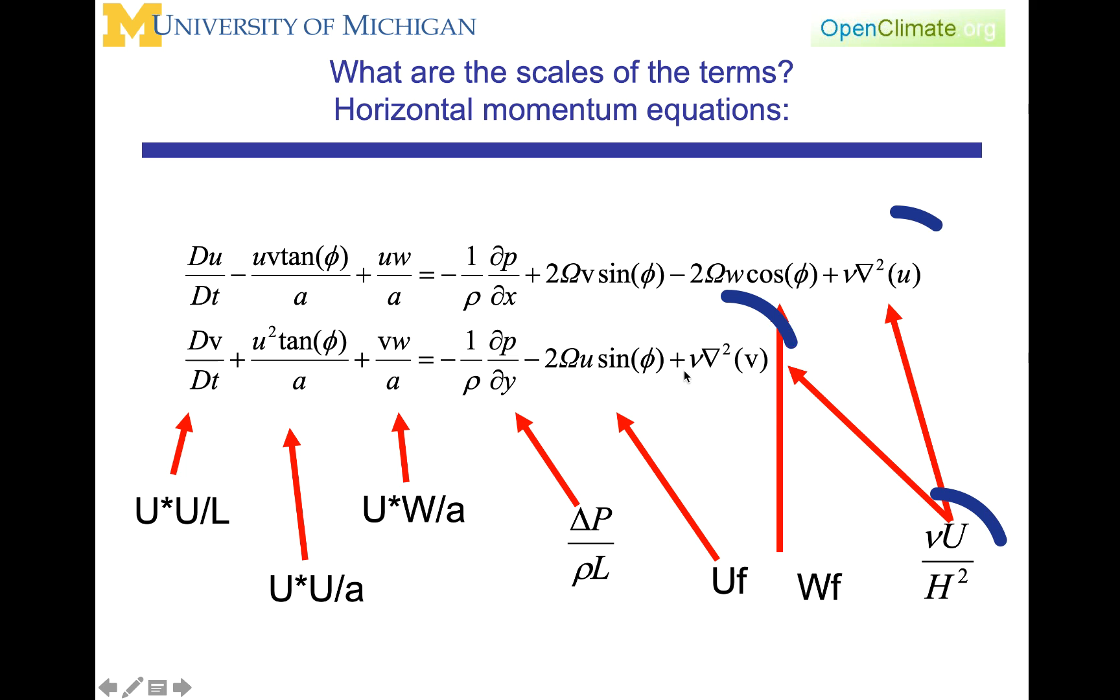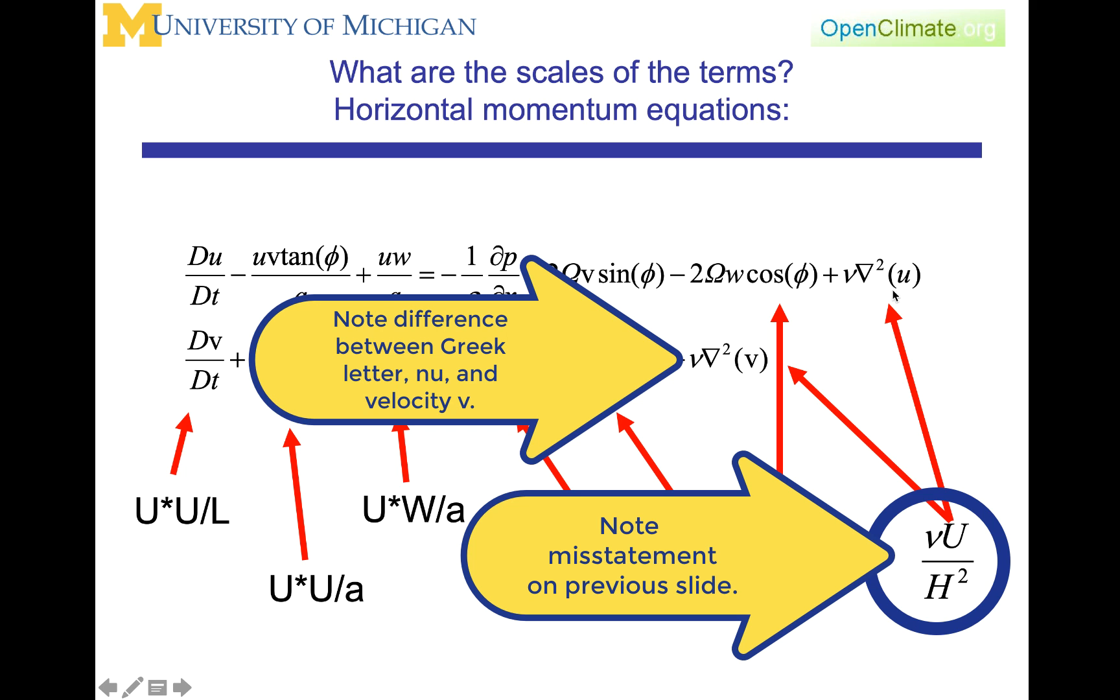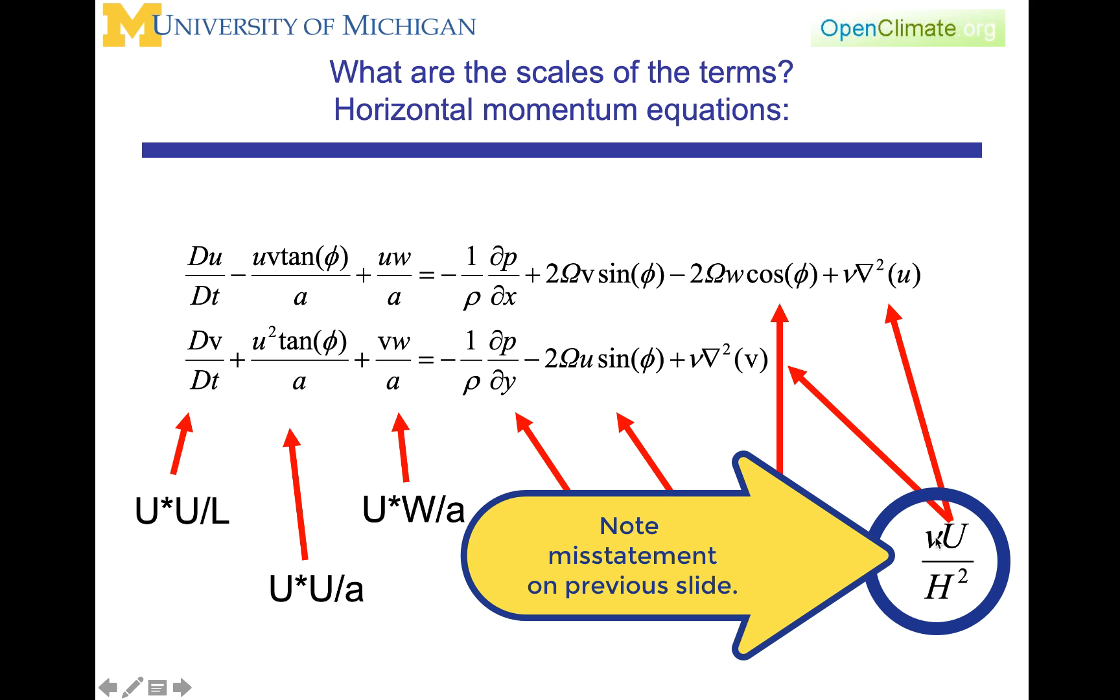And then the scale of the viscosity term is this viscosity coefficient times u, the velocity, over h squared. There's a little bit of a trick there, because since this del squared is the second derivative with respect to x, the second derivative with respect to y, and the second derivative with respect to z, since h is smaller, that means that this is the dominant term of the viscosity.